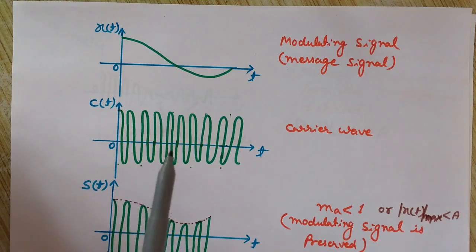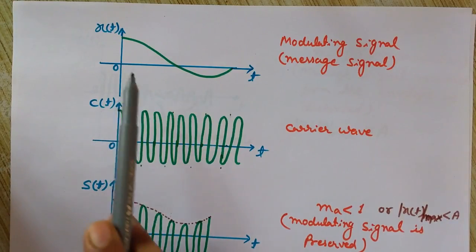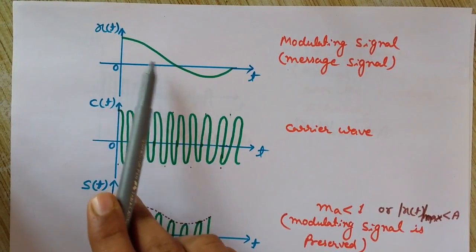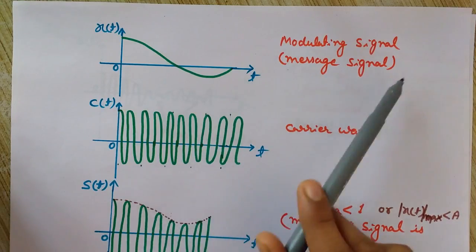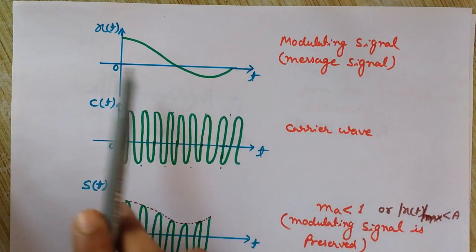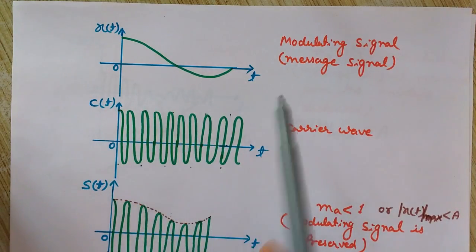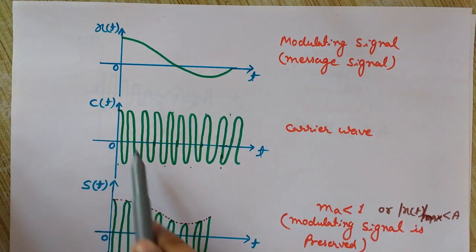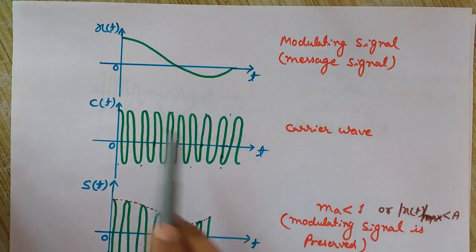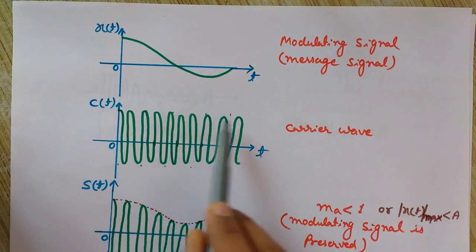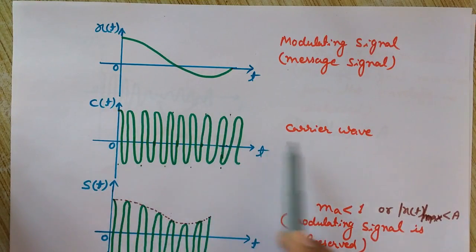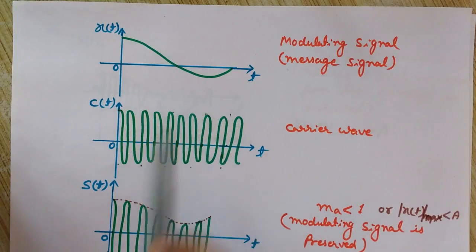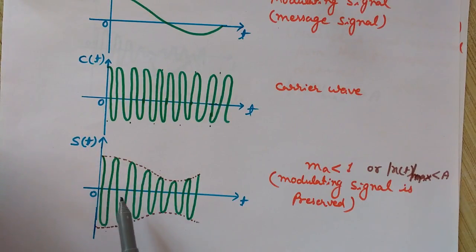Now let's understand the concept with waveforms. Here is the waveform of a modulating signal — also called the message signal or baseband signal. This simple waveform is the modulating signal, and this one is the carrier wave. As you can see, the amplitude of the carrier wave is constant and it is a high-frequency wave that acts as a carrier for the modulating signal.